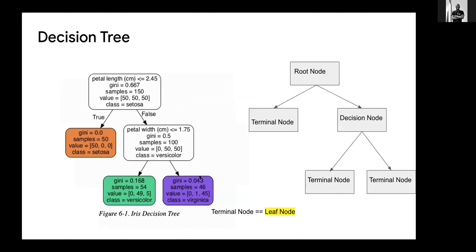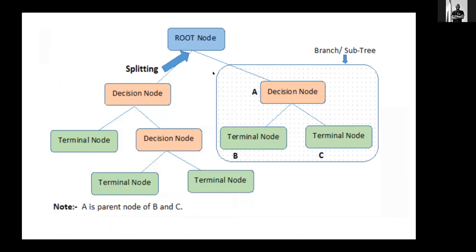This is how it looks: we have the root node, the decision node, and when we have no child node, this becomes a terminal node. We can also say that A is a parent of B and C, and a terminal node cannot be a parent because it has no child nodes.